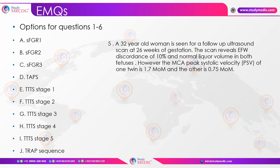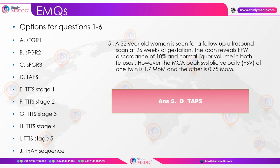EMQ case 5: A 32-year-old's follow-up ultrasound at 26 weeks shows EFW discordance of 10% and normal liquor volumes in both fetuses — so neither sFGR nor oligo-poly sequence, ruling out TTTS. MCA PSV of one twin is high and the other is low. This qualifies as TAPS — Twin Anemia Polycythemia Sequence. Whenever MCA PSV abnormalities are present without fluid abnormalities, think TAPS.